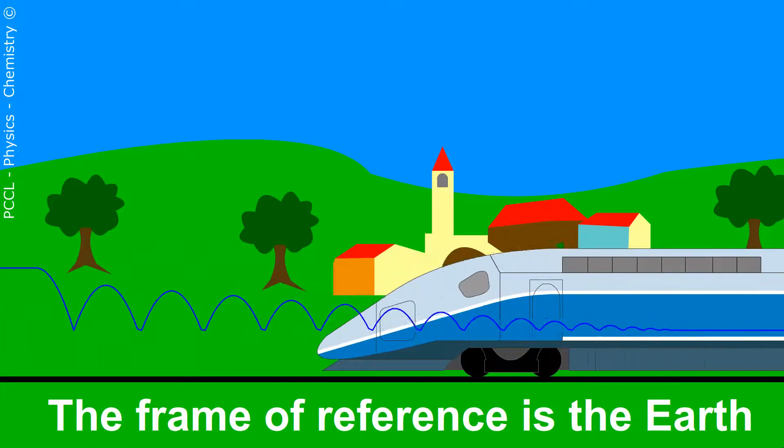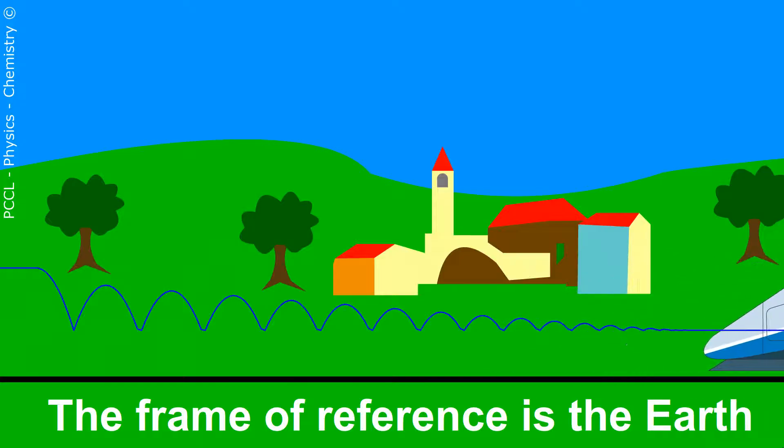This is why I wanted to do a little animation on the choice of the reference frame. The reference frame is an object. Earlier it was the train, here it is the ground.